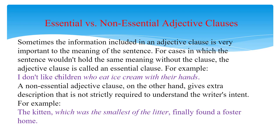A non-essential adjective clause, on the other hand, gives extra description that is not strictly required to understand the writer's intent. For example: 'The kitten, which was the smallest of the litter, finally found the foster home.' The adjective clause gives extra information, but it isn't necessary to get the gist of the sentence about the cat finding a home. Non-essential adjective clauses are set off with commas to show that they are loosely connected to the rest of the sentence.